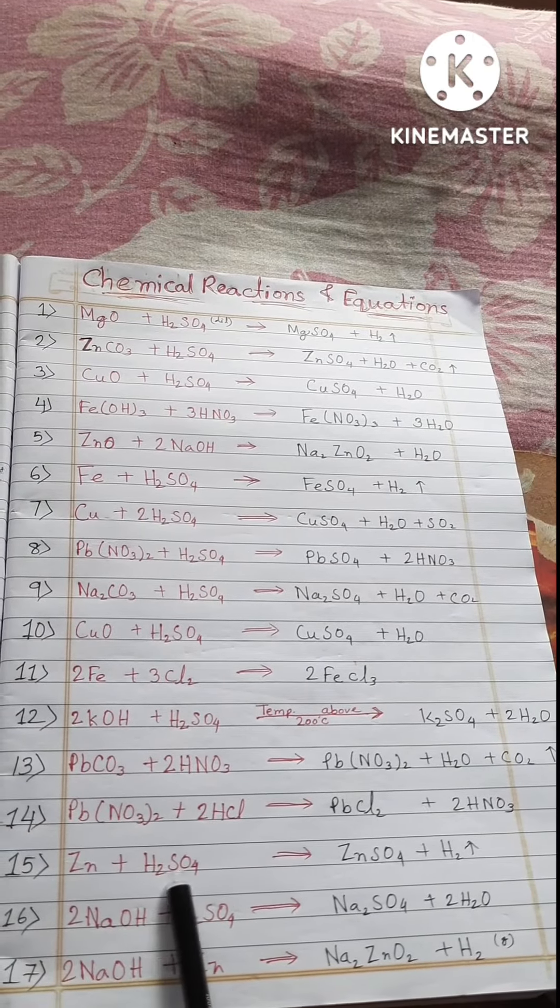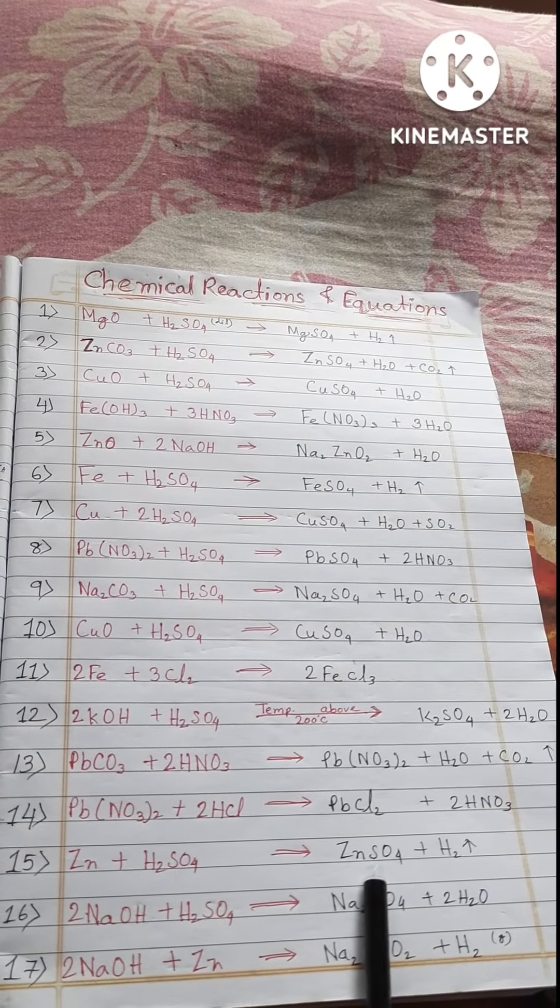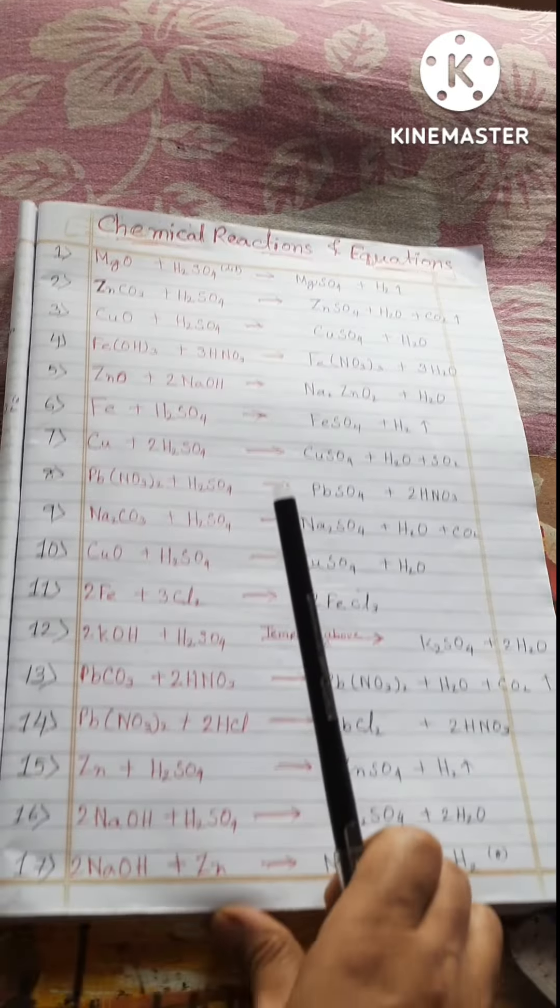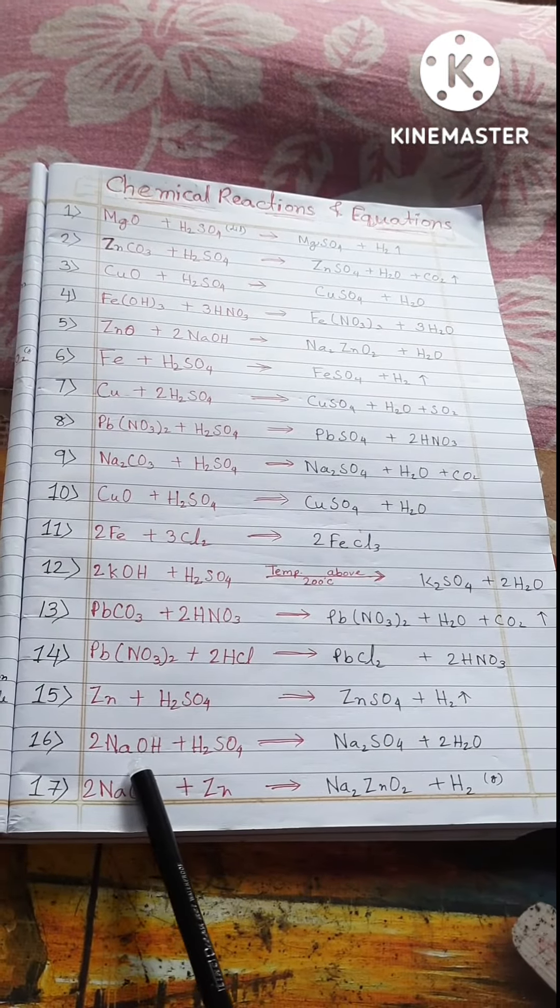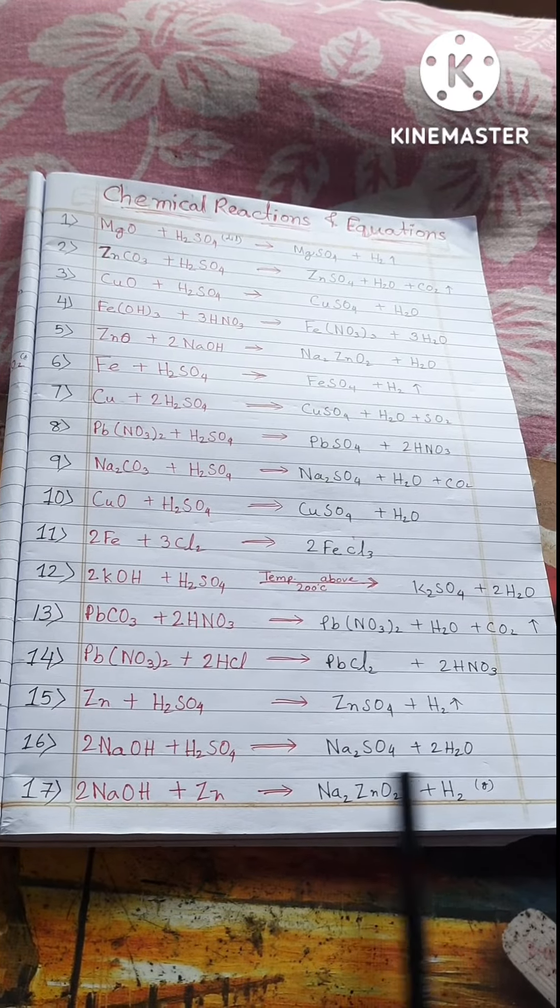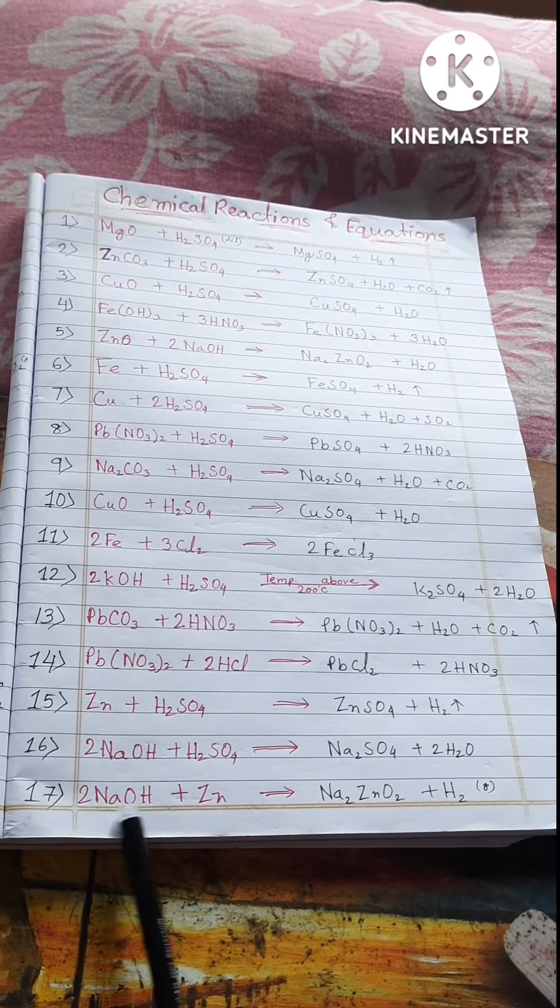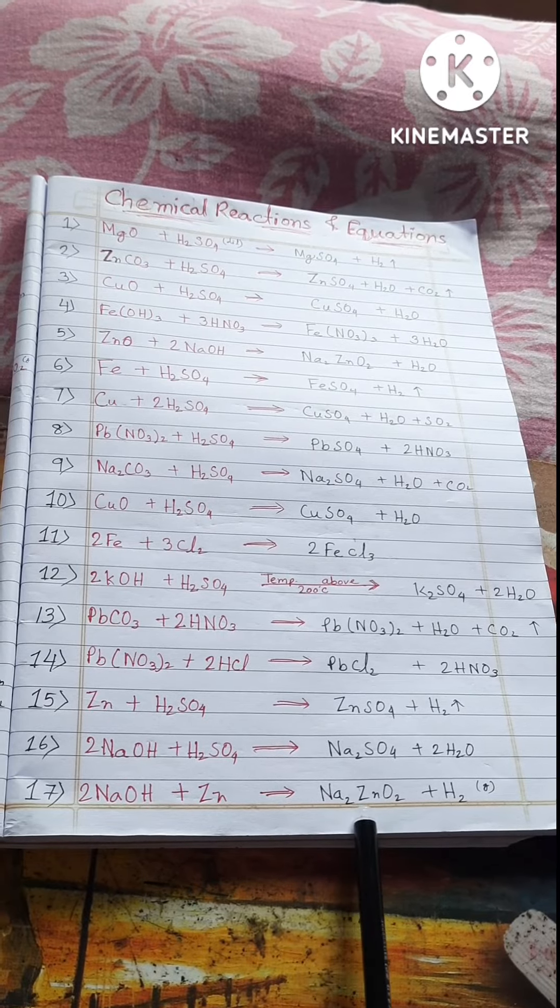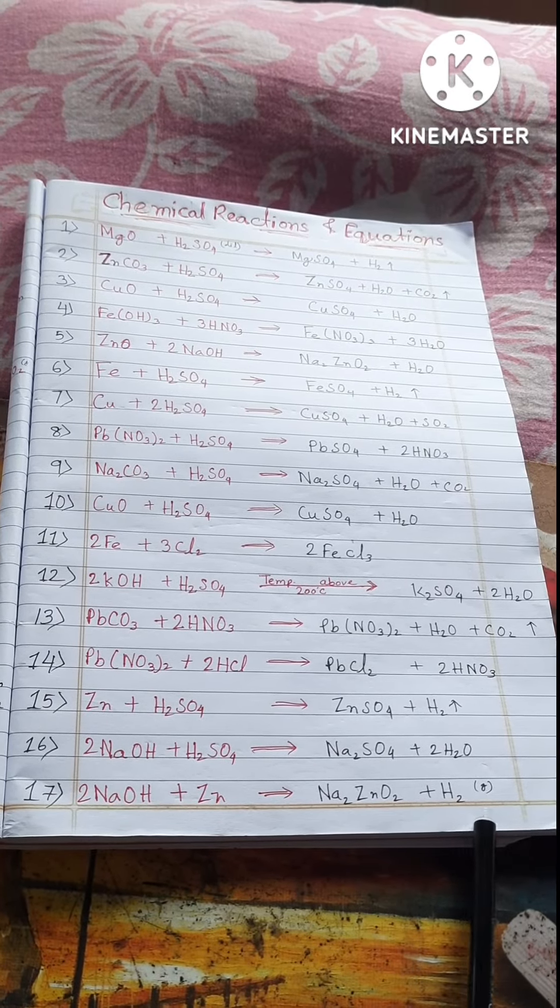ZnO plus H2SO4 equals ZnSO4 plus H2O. 2NaOH plus H2SO4 equals Na2SO4 plus 2H2O. 2NaOH plus Zn equals Na2ZnO2 plus H2. Thank you.